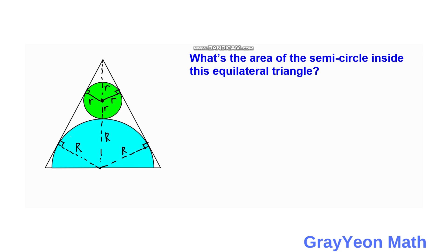Next, we consider the fact that this equilateral triangle has an angle of 60 degrees. The vertical line we drew earlier divides the triangle into two 30-60-90 triangles, because this becomes 30 degrees and this is a right angle. Near the green circle, if that angle is 30 and this is 90, then this angle should be 60, forming a 30-60-90 triangle. Similarly, down to the center of the semicircle, we form a larger 30-60-90 triangle.